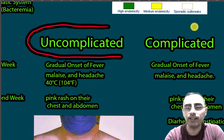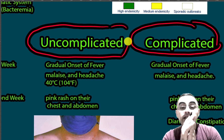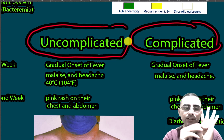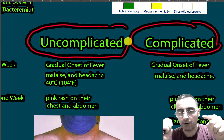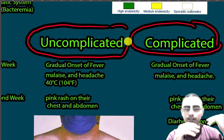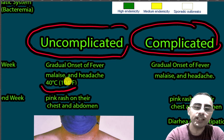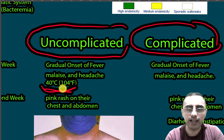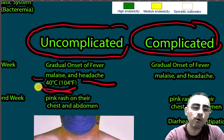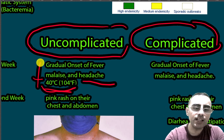Typhoid fever has two types: uncomplicated and complicated. The uncomplicated version is much more common and typically has four phases over four weeks. In the first week, we see a gradual onset of fever — temperature gradually increases, for example from 37 to 38, 39, and up to 40 degrees Celsius (104°F). Malaise and headache are also common symptoms in both forms.